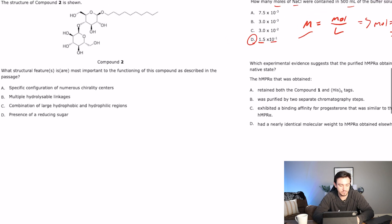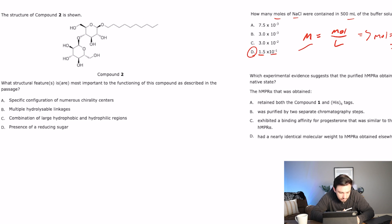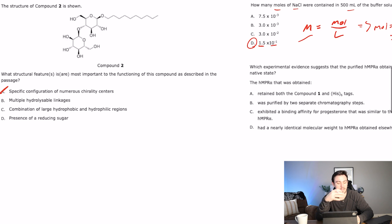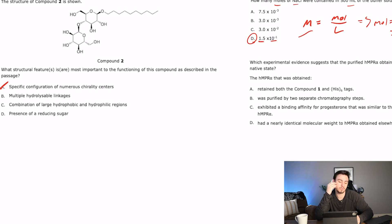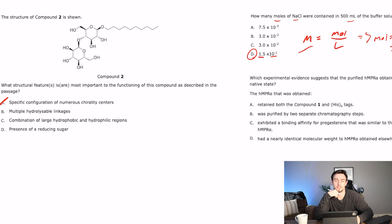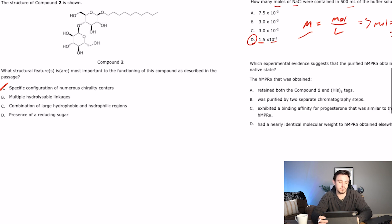And so what's important about a detergent is that they have one super nonpolar side and one super polar side. So let's go through and see if they have something that describes a detergent. A says specific configuration of numerous chirality centers. Yeah, it looks like there's a bunch of chiral crap in here, but that's not super important. So I don't know how chirality is going to help us separate things. B says multiple hydrolyzable linkages. I don't know what that word means. I have a pretty general rule of thumb, though, that if I don't know what a word means, I'm not going to pick it. If I don't understand an answer choice, I'm not going to pick it unless I know for a fact the other three are wrong.